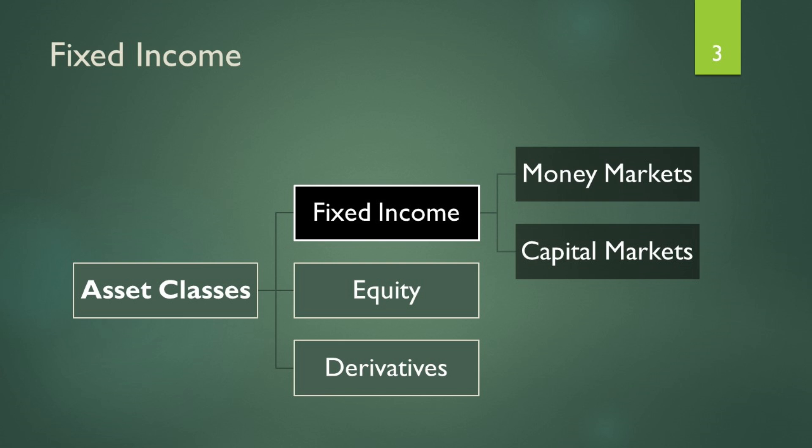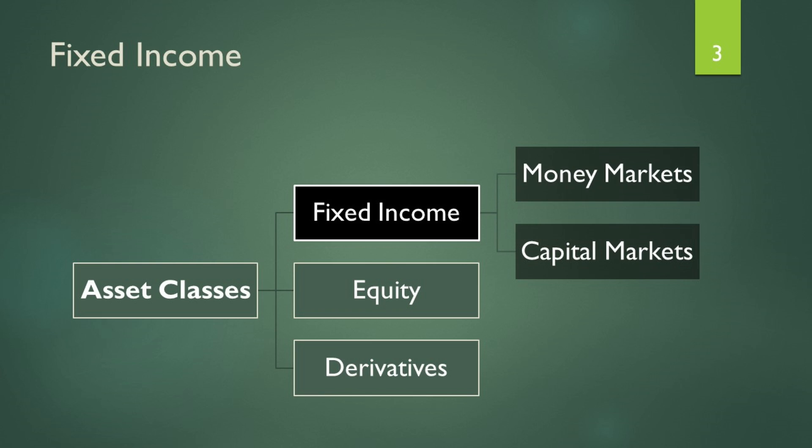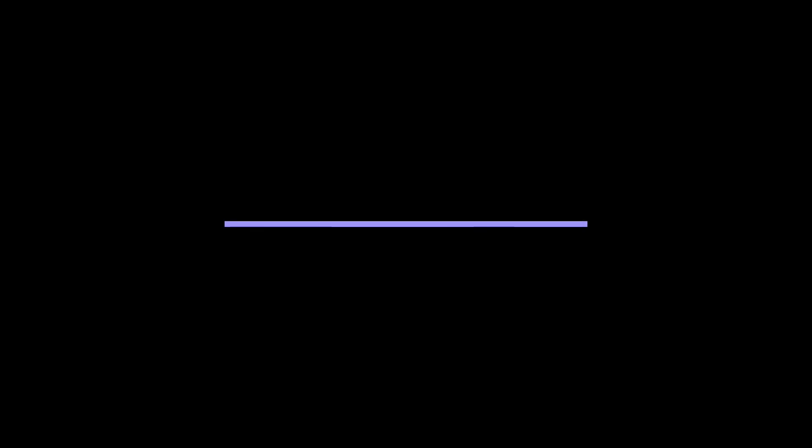To summarize: the money market is shorter term, up to one year, and the capital market is longer term. T-bills or treasury bills are issued by the government up to one year. Treasury notes go up to 10 years, and treasury bonds up to 30 years or possibly more, depending on the country. In the next video, we are going to talk about the equity market.